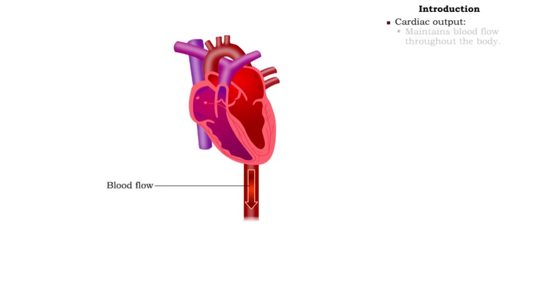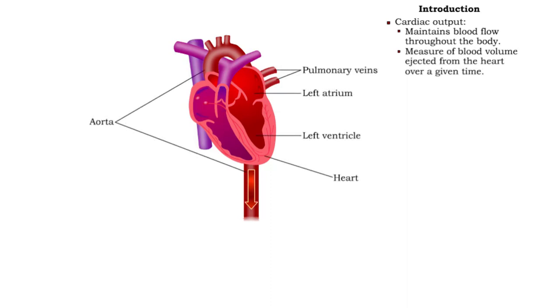The pumping action of the heart maintains blood flow throughout the human body. Cardiac output is a measure of blood flow. It is the volume of blood ejected from the heart over a given time.